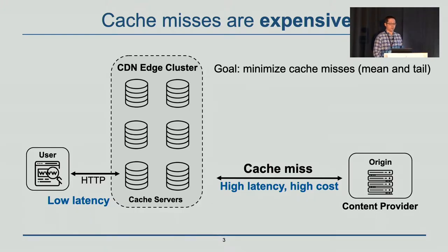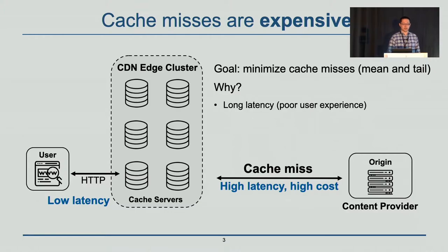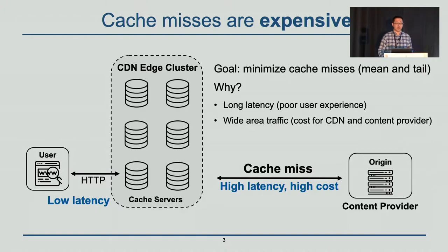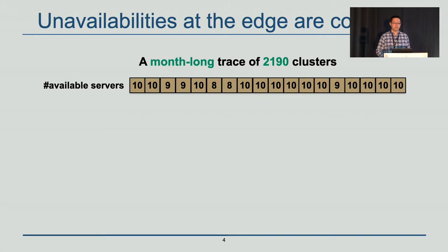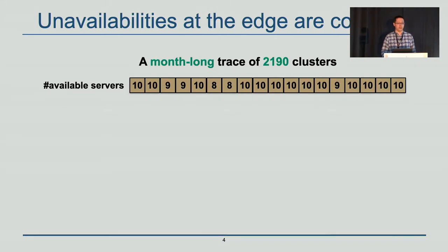The goal of CDN is to minimize cache misses both in terms of mean value and also at the tail. Cache misses incur high latency and cause poor user experience, and they increase wide area traffic both for CDN and content providers. We observe that unavailability at the edge is very common, so we collected a month-long trace of over 2,000 clusters from Akamai.